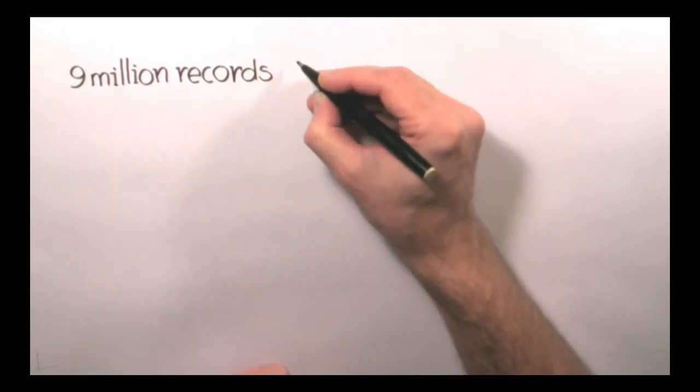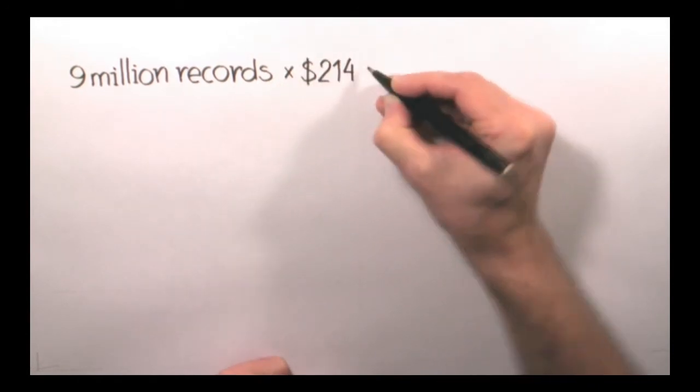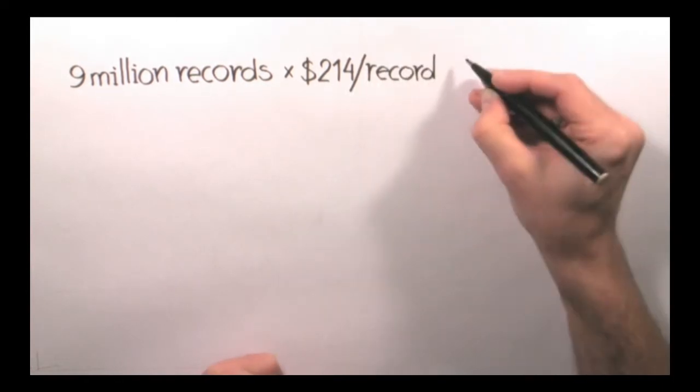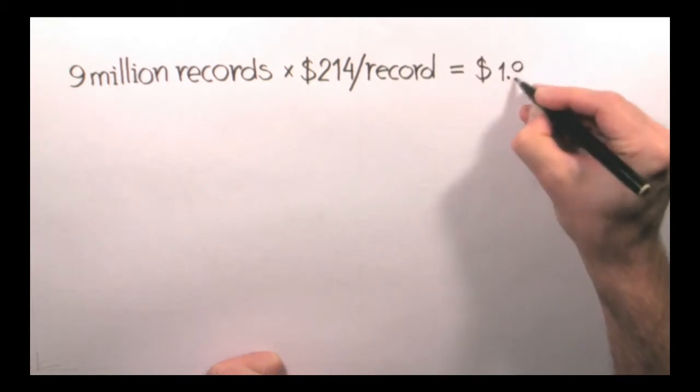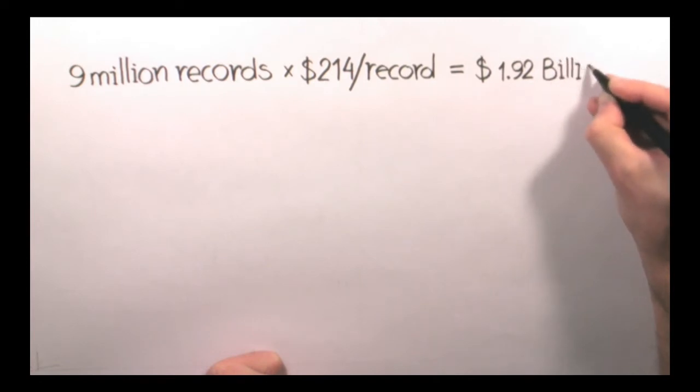Well, my helping hand here, hopefully will perform this calculation for me. 9 million records times $214 per record, that's $1.92 billion. It's a $1.92 billion flash drive. Sounds like a lot? Definitely does to me. But that might even be cheap.